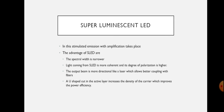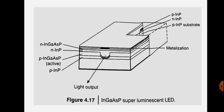In the structure of the superluminescent LED, there is a U-shaped cut. That U-shaped cut in the active region increases the density of the carrier, which improves the power efficiency. The figure shows the superluminescent LED structure — it is a PN junction with a P-type indium gallium arsenide phosphate active layer and an N-type indium phosphate layer. You can see the U-shaped cut in the structure.